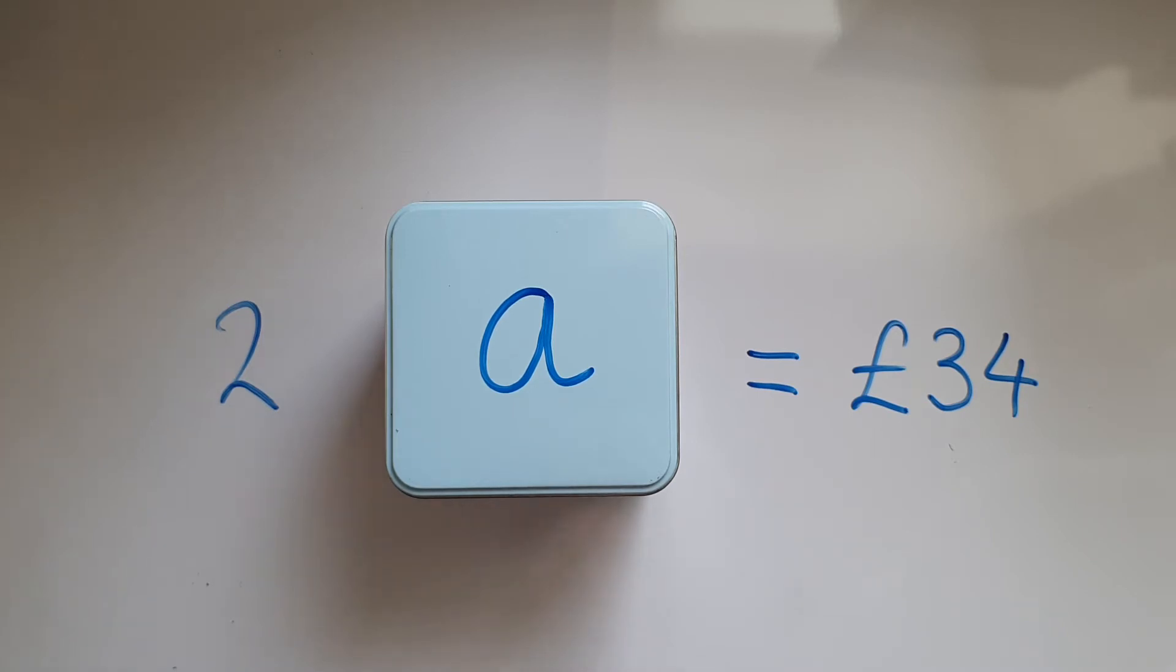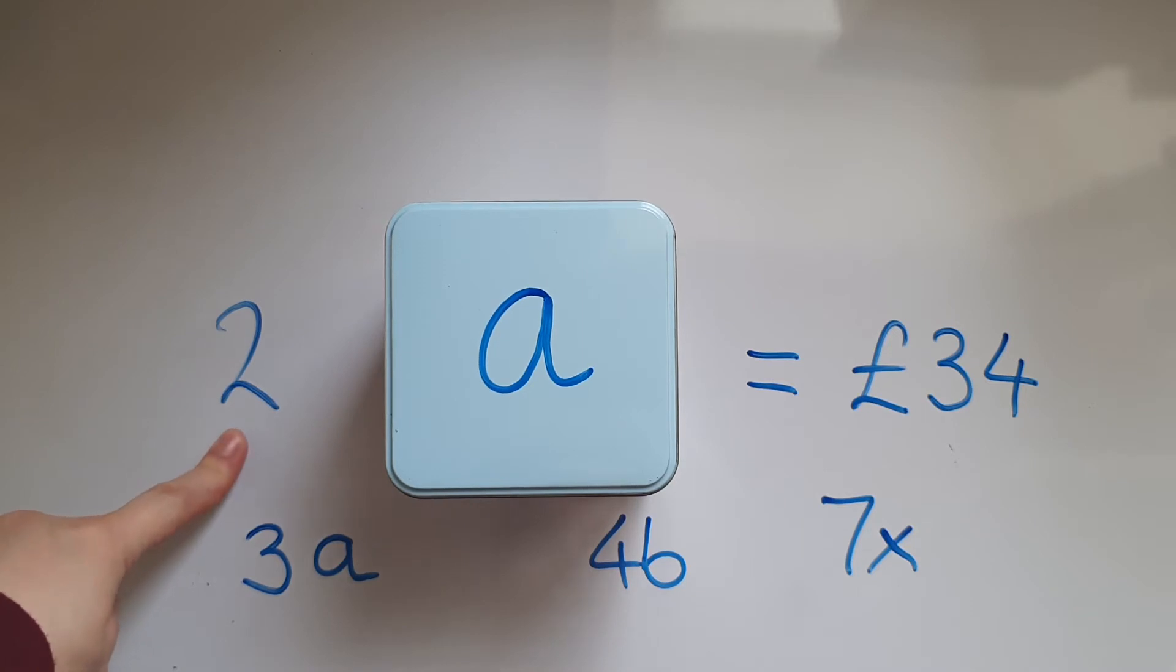If you've got 3 lots of A, you can just write 3A. Or, 4 lots of B, just 4B will be enough. 7X, 9Y, 11D. And notice how we've got the digit, the number in front of the letter, never the other way around. So, 3A, 4B, 7X, 9Y.